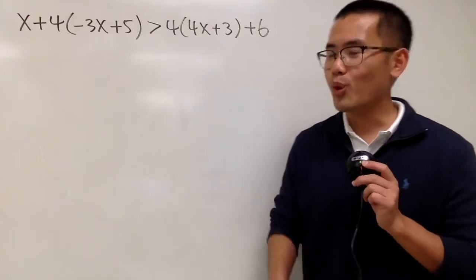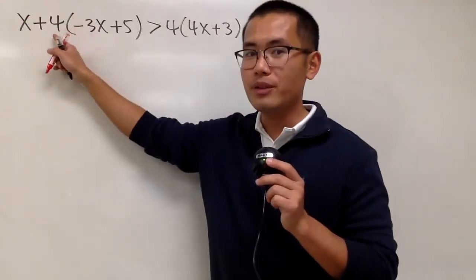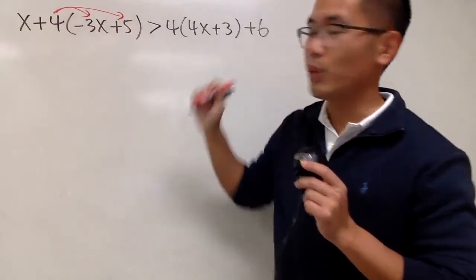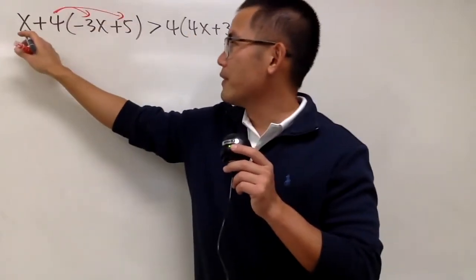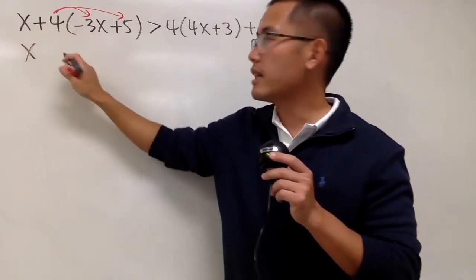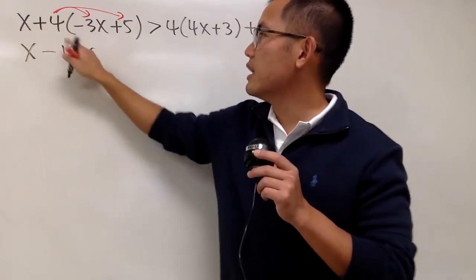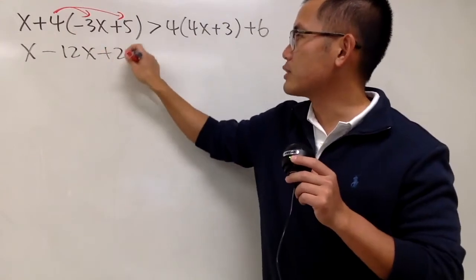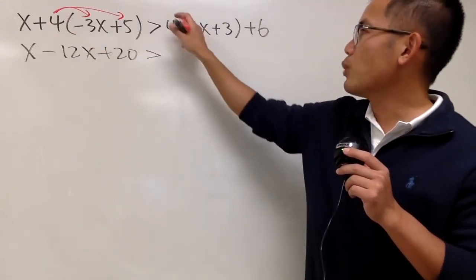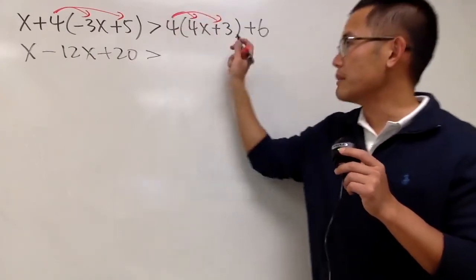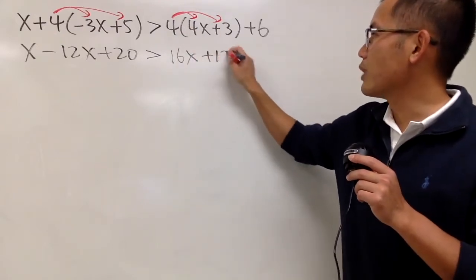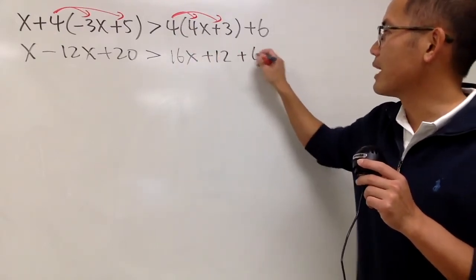To solve this inequality, we will first distribute the number in front of the parentheses. For the first part, we have x, and 4 times negative 3x is minus 12x, and 4 times positive 5 is plus 20. We maintain the greater than symbol. Then distribute the 4: 4 times 4x is 16x, and 4 times 3 is plus 12, and lastly we have the plus 6.